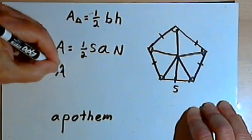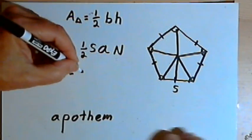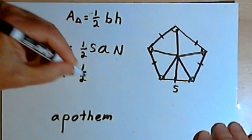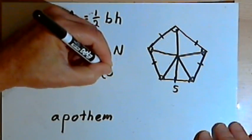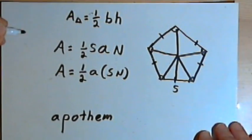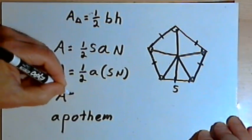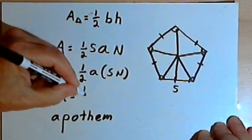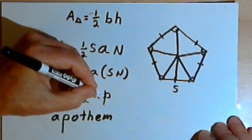Now, more often you're going to see the letters rearranged. And so you'll see people saying the area is one-half times A, and then maybe in parentheses times S times N. And most often what you're going to see is this, that the area is one-half times A, and instead of S-N, you're going to see P.